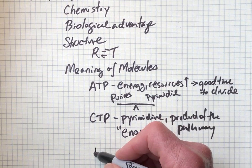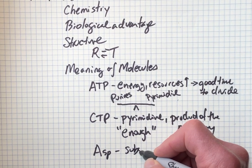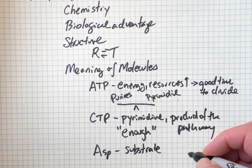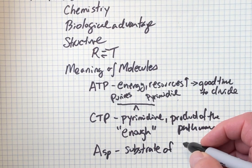Finally, we have aspartate. This is a substrate for the enzyme, right at the beginning of the pathway. So it's a substrate of ATCase.